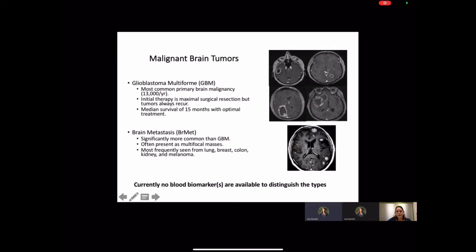Brain metastasis is a secondary tumor most frequently derived from lung, breast, and melanoma primary tumors. They present as multifocal masses on an MRI as depicted here.